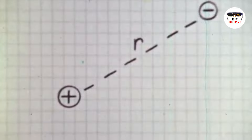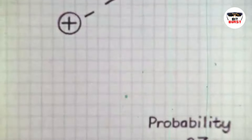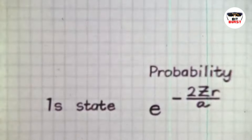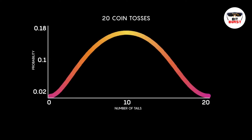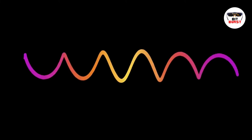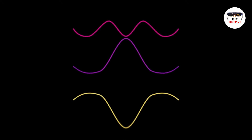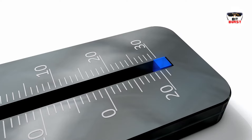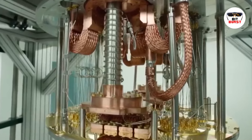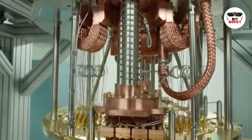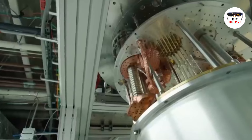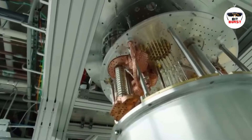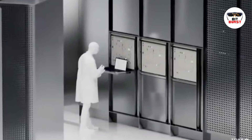Quantum computers need to be heavily shielded and isolated from their environment. Any external interference — whether it's temperature fluctuations, electromagnetic waves, or even cosmic rays — can cause the qubits to lose their quantum state, a process known as decoherence. Therefore, quantum computers are usually housed in carefully controlled environments to minimize such disturbances. The physical structure is designed to create and maintain the delicate quantum states of qubits, allowing them to perform complex computations beyond the reach of classical computers.